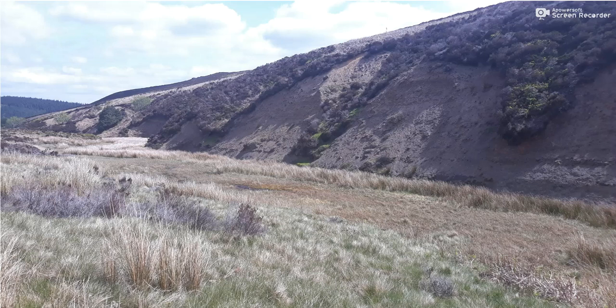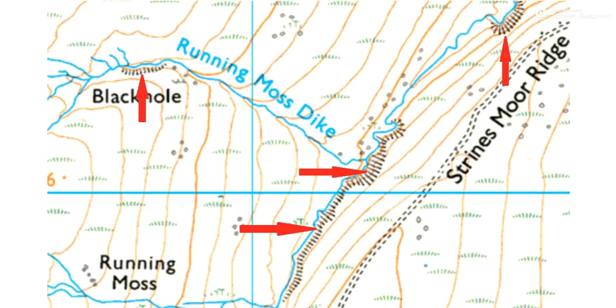So why is that important for us as fell runners or hill walkers? Why do we need to know that and what use is it to us? Well, imagine if we are route planning - we might want to avoid areas like that. Can you imagine trying to ascend or descend from the bank at the top down here? If the vegetation went all the way down it would be a lot easier because you'd have something to hold onto and it gives more purchase, whereas trying to go up or down this loose eroded slope could be quite dangerous.